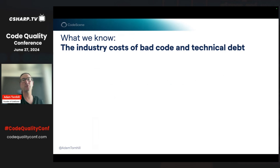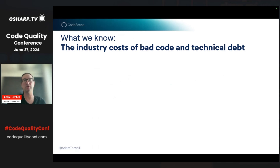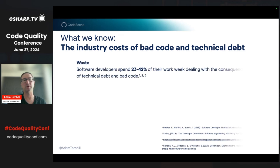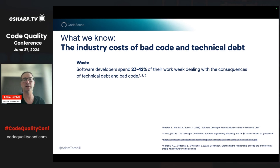During the past four to five years, we have learned a lot about the industry cost of bad code and technical debt in general. There are multiple papers you can look at, but at the end of the day it doesn't matter which paper you read because they all paint a pretty depressing view of our industry. Did you know that as developers, we waste somewhere between 23 to 42% of our work week dealing with the consequences of technical debt and bad code in general?